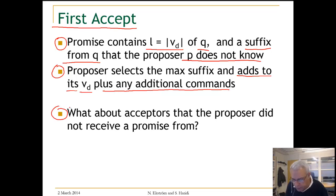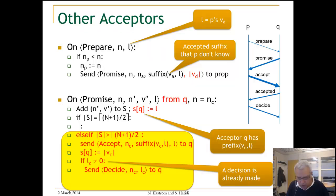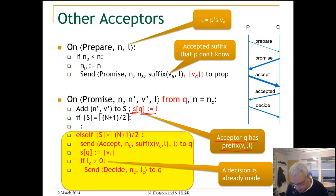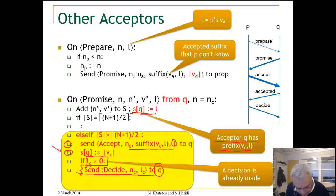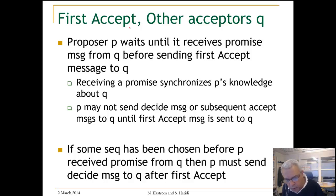For acceptors from which the proposer did not receive a promise yet, after a majority has responded, the proposer updates its knowledge about those acceptors and sends what has been proposed — essentially the suffix of VC and the length from where to start adding the suffix. It also updates the knowledge it knows about each acceptor. If LC is not equal to zero, it sends a decide message to Q.